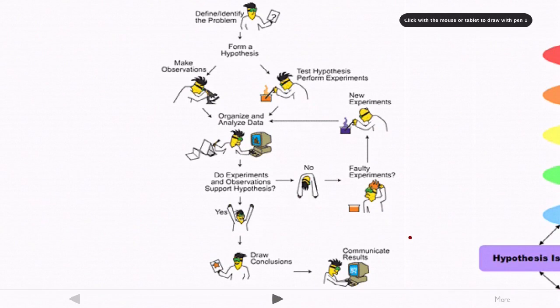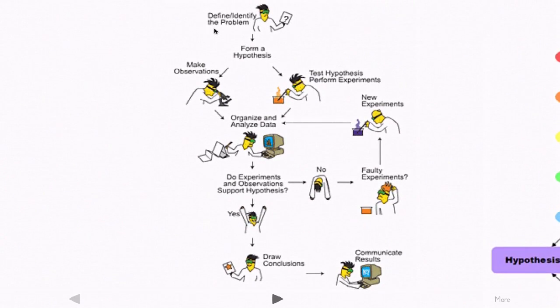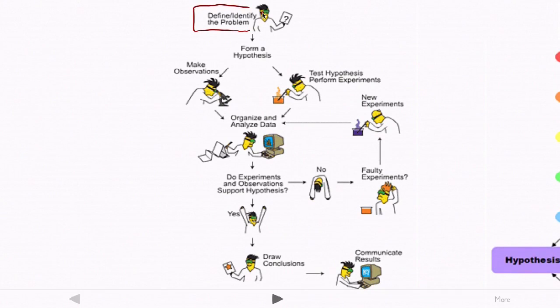And so this is one version of the scientific method. And you can find many of these on the web. And while they all share a similar structure, they have differences in some of the elements. So this one starts with defining and identifying the problem. So this is pretty analogous to the situation we face in a startup. What's the customer problem or need that we're solving? We're going to then form a hypothesis about it and then either make observations or do some kind of test, perform experiments to either verify or rule out that hypothesis.